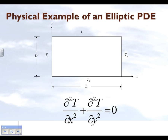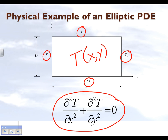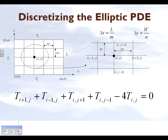So in the previous segment, we saw a physical example of a second-order linear elliptic partial differential equation. We looked at basically a Laplacian equation which gives us a steady-state temperature in a plate. For simplicity, we take a rectangular plate, and it is maintained at four different temperatures on the four different edges of the rectangle. What we want to do is find out what the temperature is as a function of x and y.